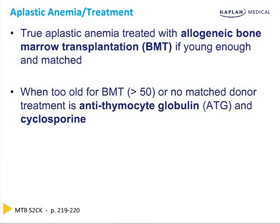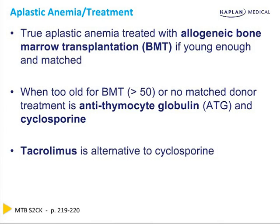Thymocytes give the name to T cells, and T cells are what's rejecting your marrow, so let's control it by getting rid of them with antithymocyte globulin. Let's control those T cells with cyclosporine to prevent the rejection of yourself. Tacrolimus, mycophenolate, and sirolimus are other T cell inhibiting drugs we use to bring the marrow back to life — exactly what you'd do after transplanting a marrow or kidney.